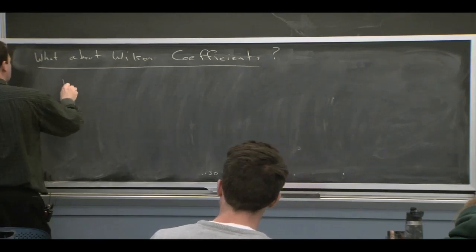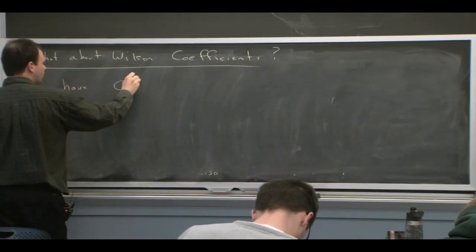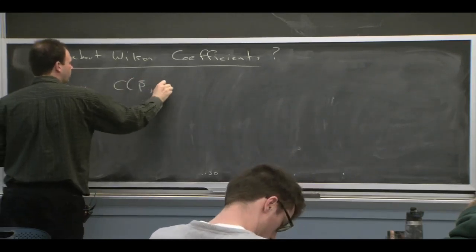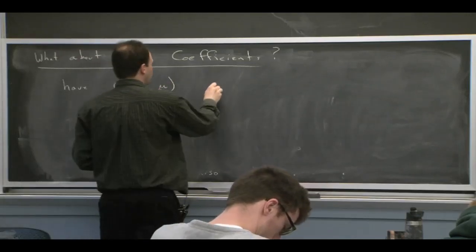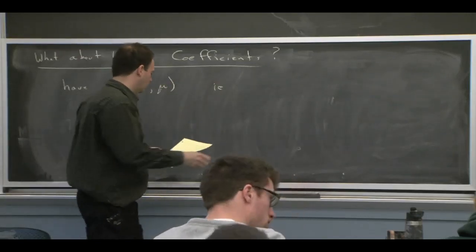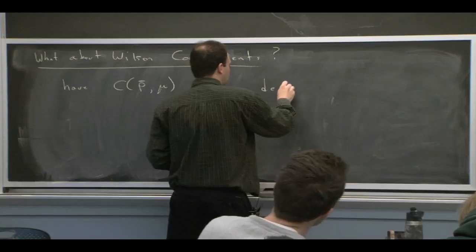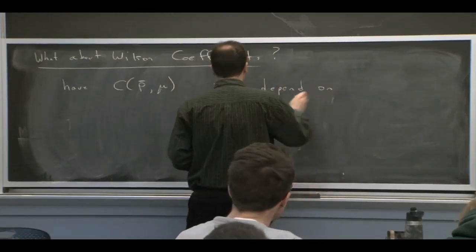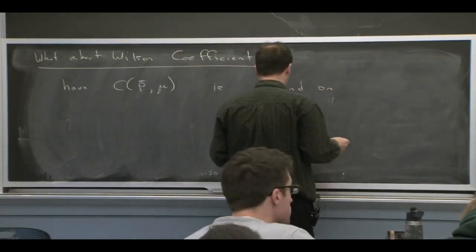Obviously, that's something important. And the way that Wilson coefficients can come in is the following way. They can depend on the large momentum that we're at order 1. And one way of denoting that is by saying that they depend on label operators.